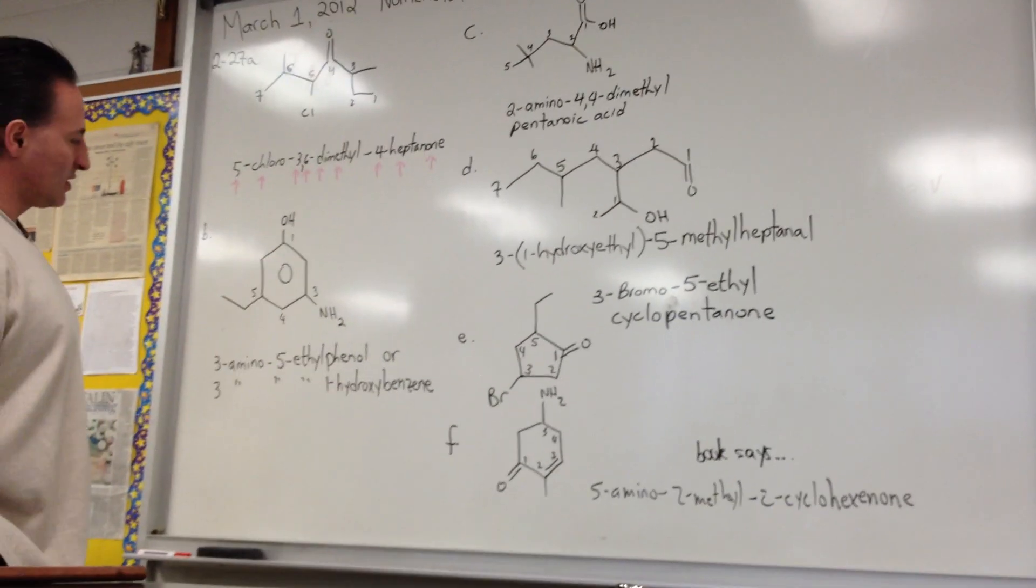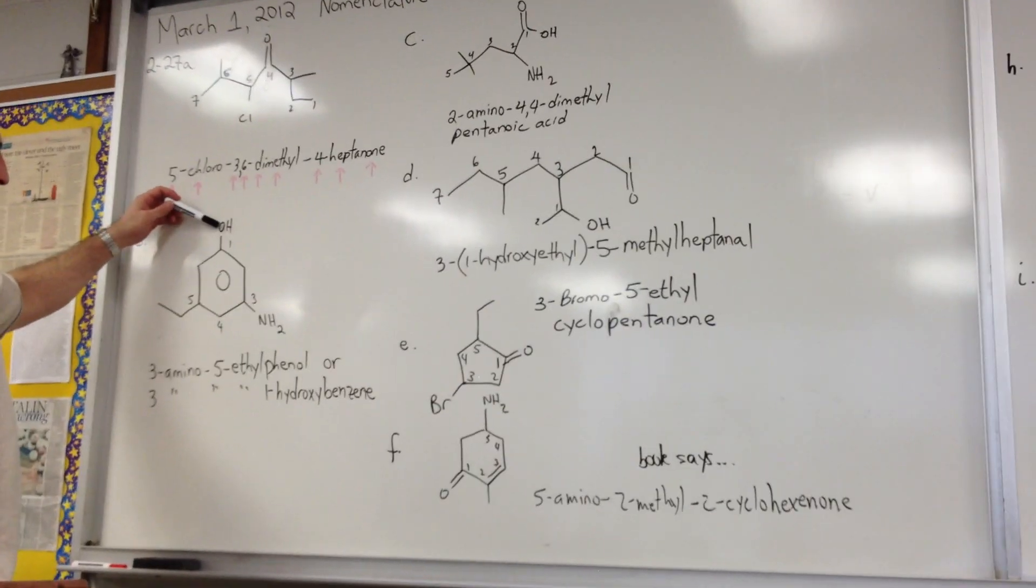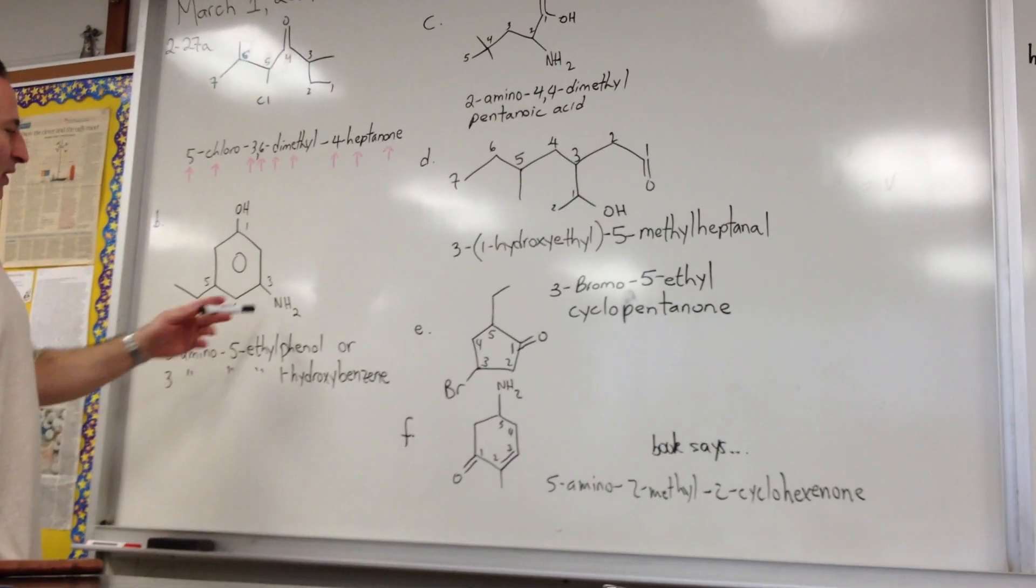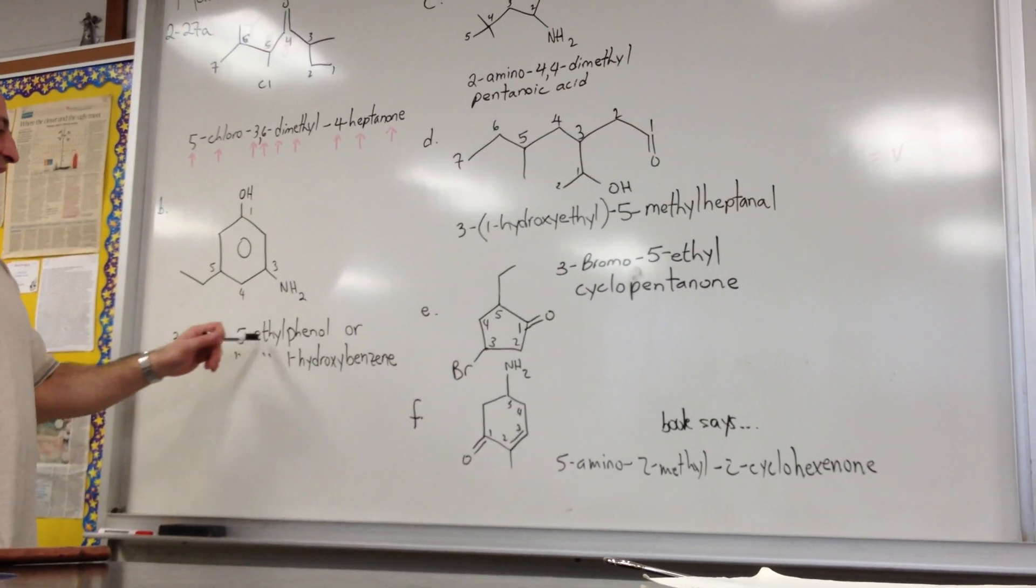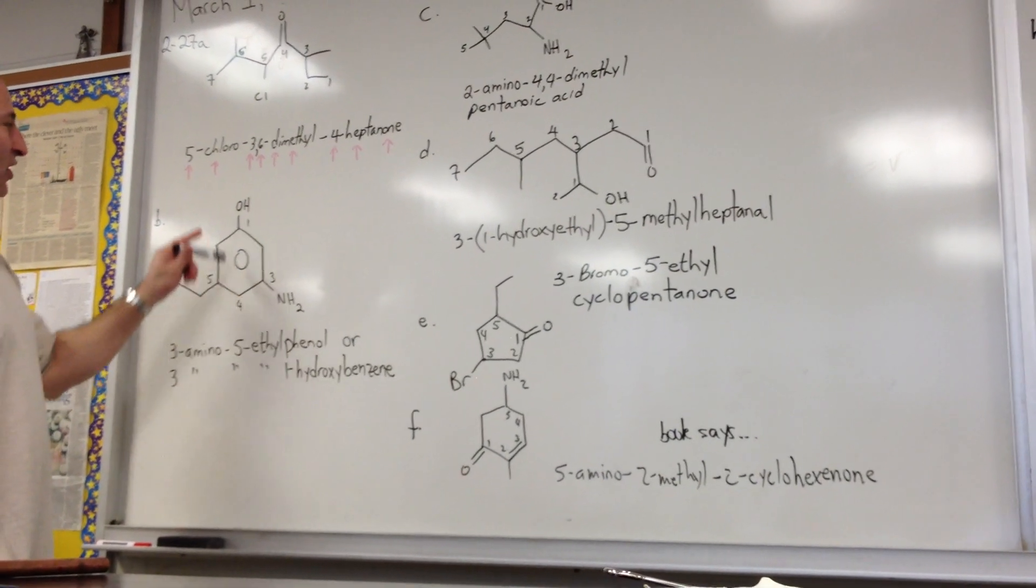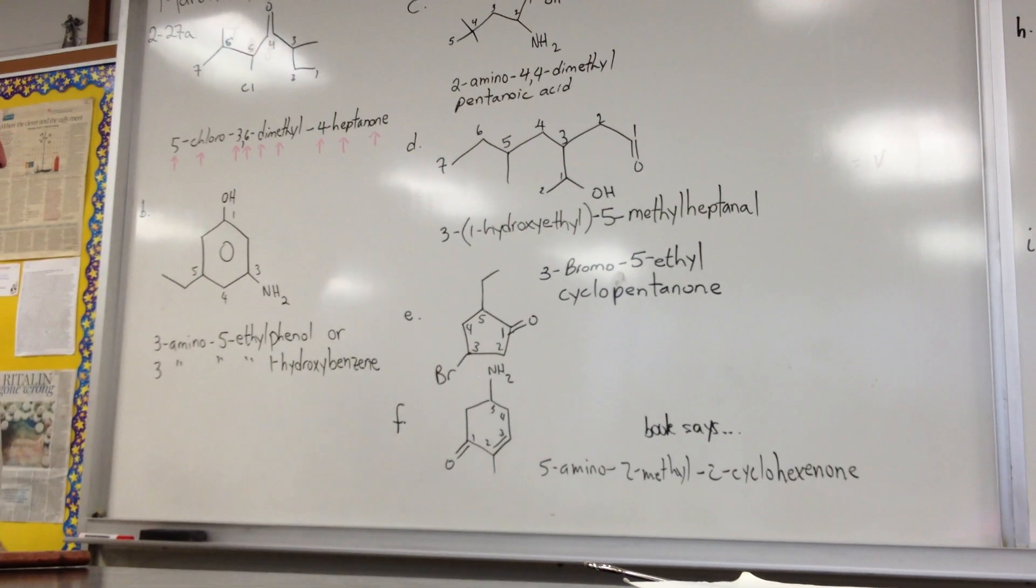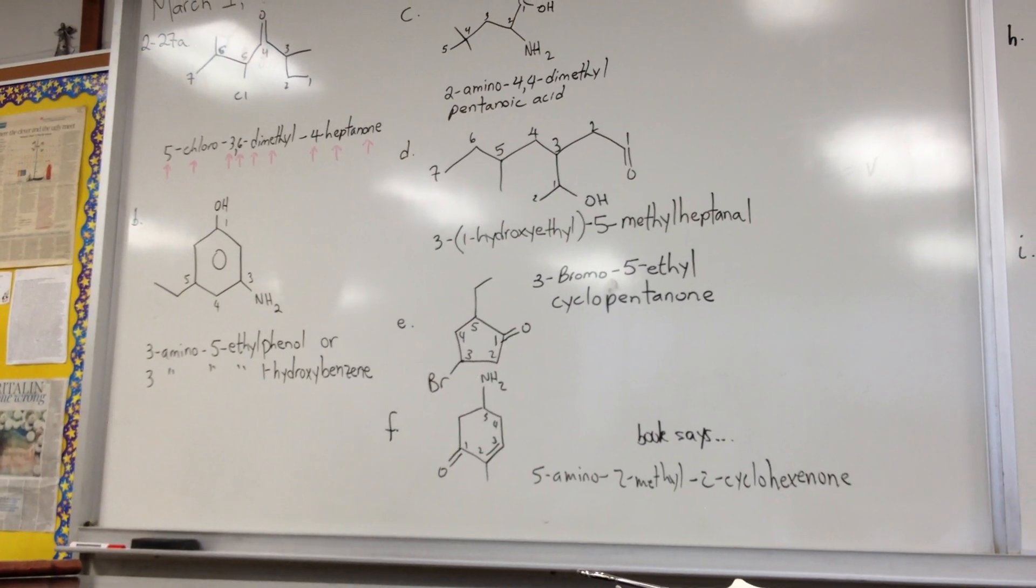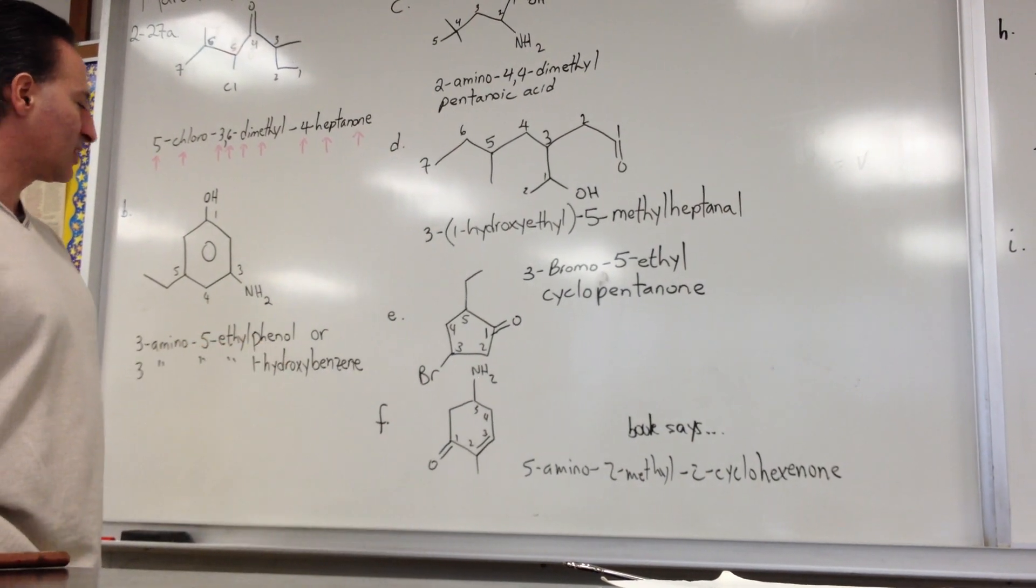B is a benzene ring with substituents. The most important substituent on there is the hydroxyl group, followed by the amino group and then followed by the ethyl group. So we call this 3-amino-5-ethylphenol because phenol is a trivial name for benzene with a hydroxy on it. If you don't want to use the trivial name, then you would call it 3-amino-5-ethyl-1-hydroxybenzene.